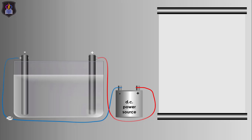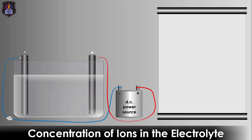Next is the concentration of ions in the electrolyte. Here, the ions of higher concentration are preferentially discharged over those of lower concentration, provided the distance between them in the electrochemical series is not wide — that is, not more than three steps.